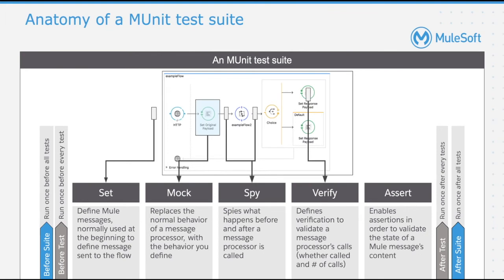The Spy event processor spies on what happens before and after an event processor is called. We could use Spy before a flow reference and after a flow reference to check what input is going into the flow reference and what output is coming out of it. Lastly, the Assert That event processor allows you to run assertions to validate the state of a Mule event's content.